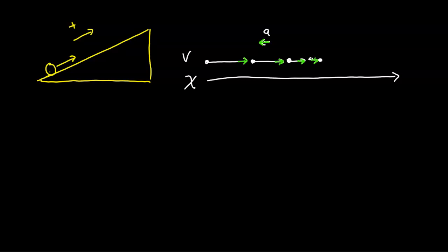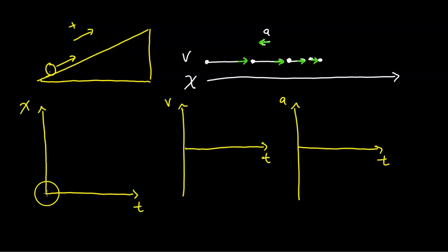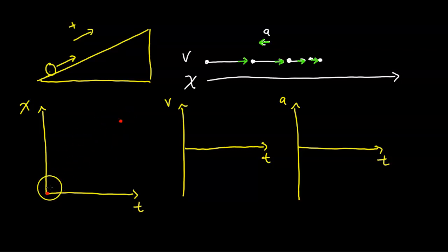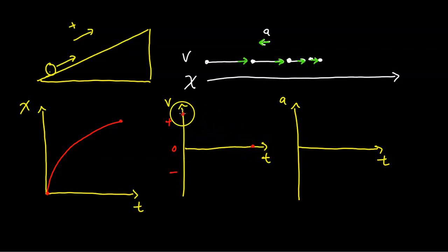Now let's look at the motion graphs for the slowing-down object. On the position graph, it starts at the origin and moves farther away, but since it's slowing down, the graph starts steep and then flattens out. For the velocity graph, the object starts with a high positive velocity and comes to a stop, so the velocity line goes from a positive value down to zero. For the acceleration, since we're dealing with constant acceleration and the acceleration arrow points in the negative direction, the acceleration graph is a negative constant horizontal line.